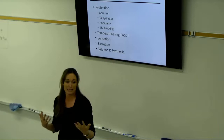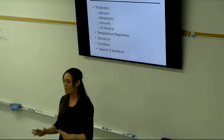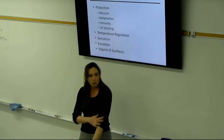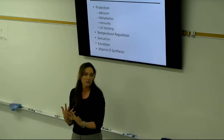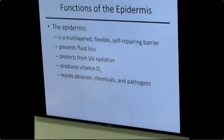Sweating combined with bringing blood to the skin surface is incredibly effective at dissipating heat. For example, stepping out of a shower without drying off causes rapid heat loss from any breeze. Skin also provides sensation through nerve endings, excretion through various glands like apocrine and eccrine, and vitamin D synthesis — converting vitamin D, which acts more like a hormone, playing a big role in calcium absorption.